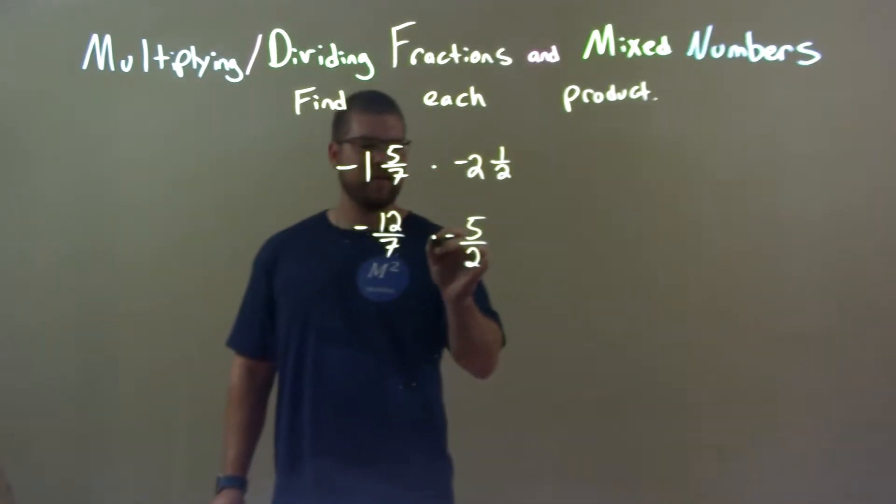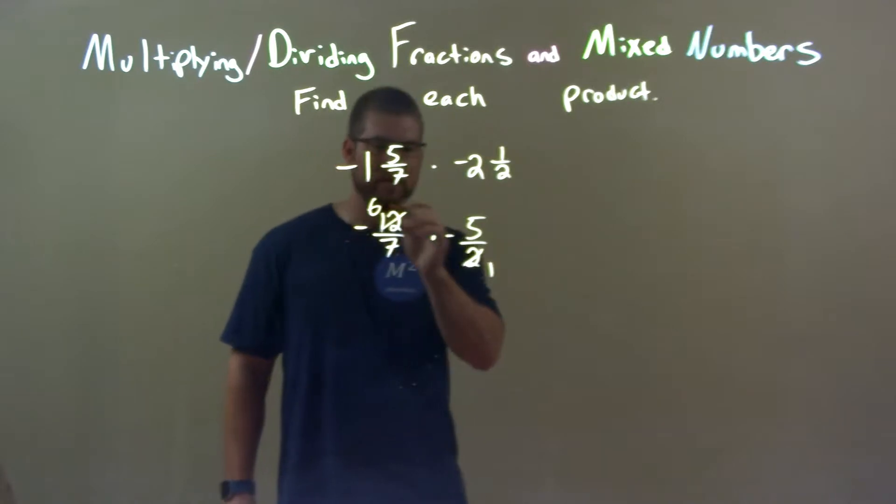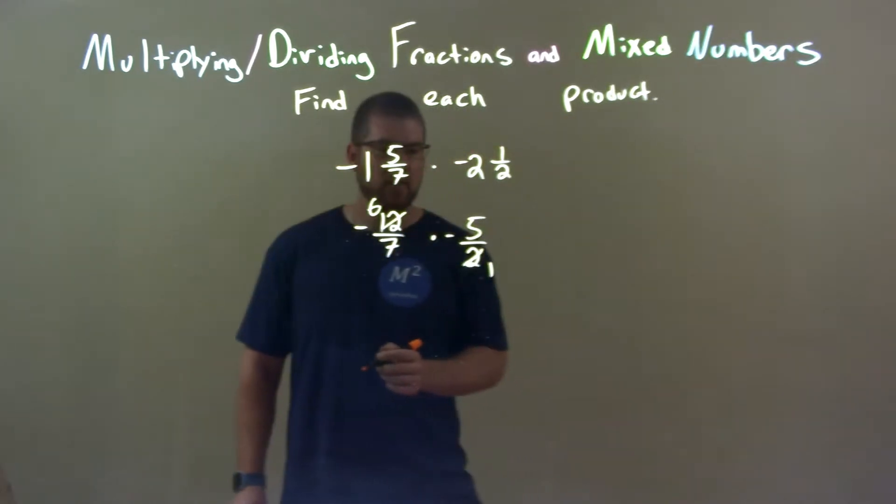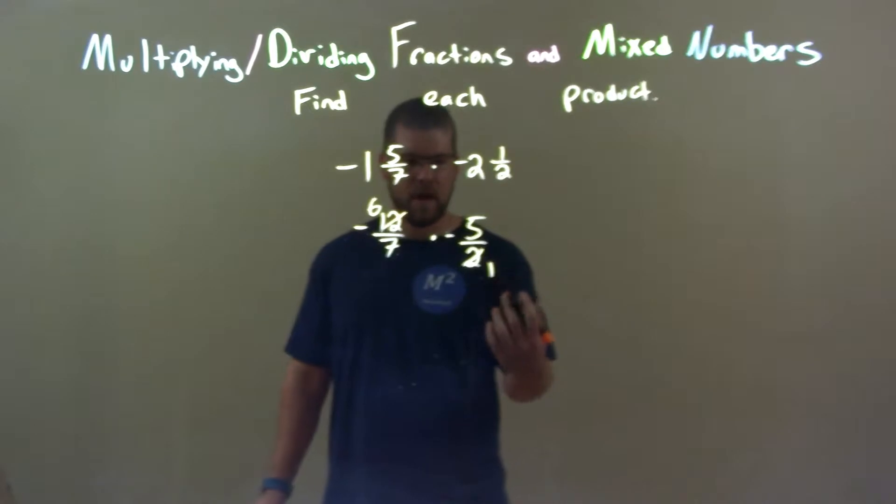Alright, so now I'm going to see if I can simplify these fractions. 2 goes into 12. So, 1 here and 12 becomes a 6. 12 divided by 2 is a 6. So, now let's go multiply across the numerator and across the denominator.